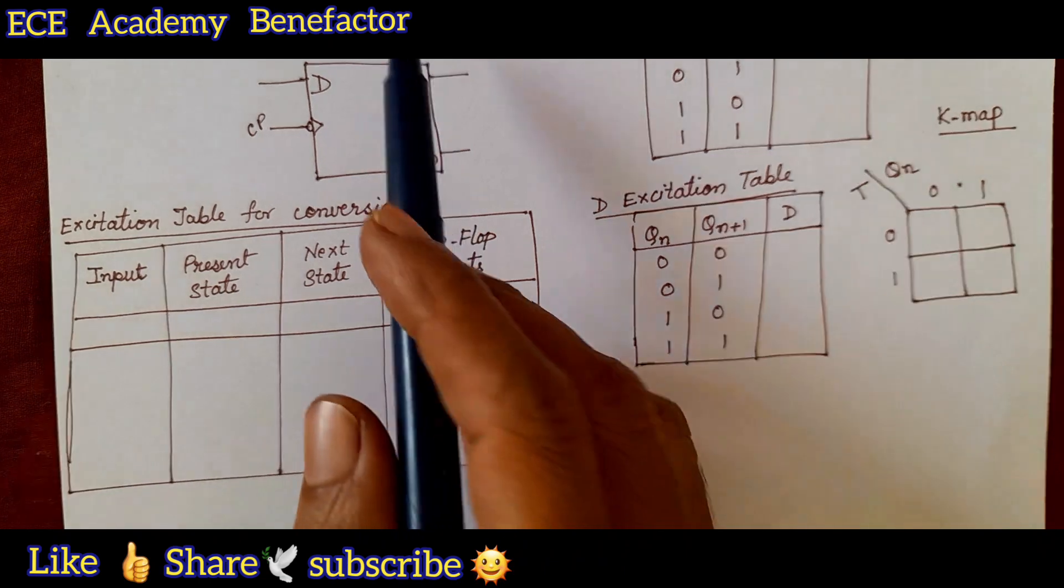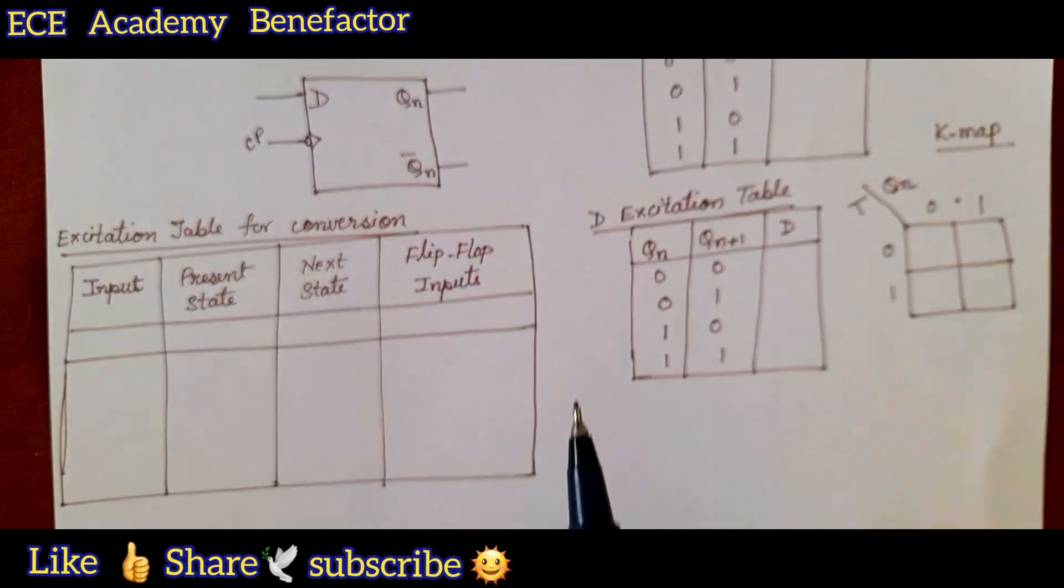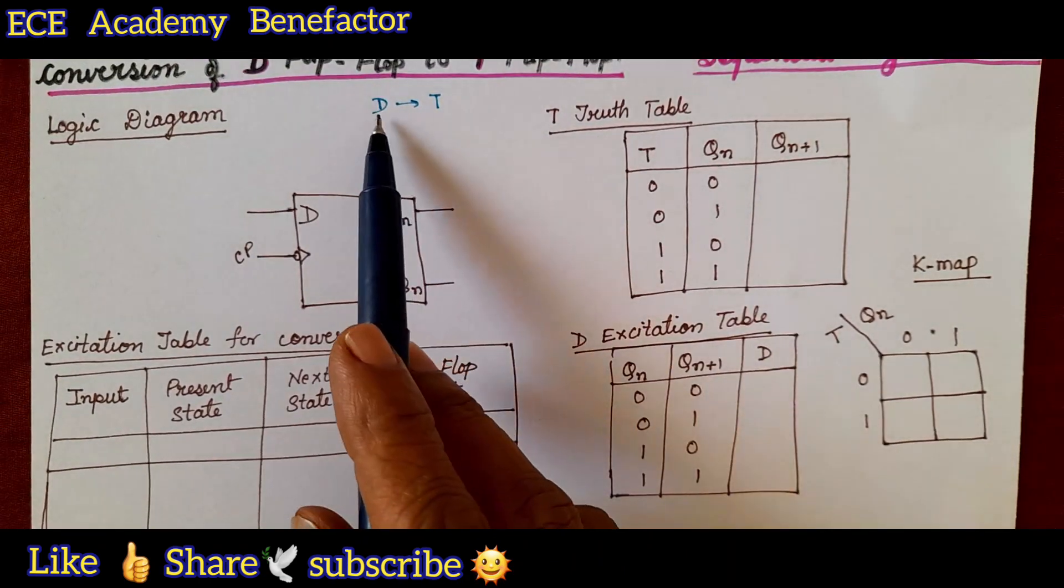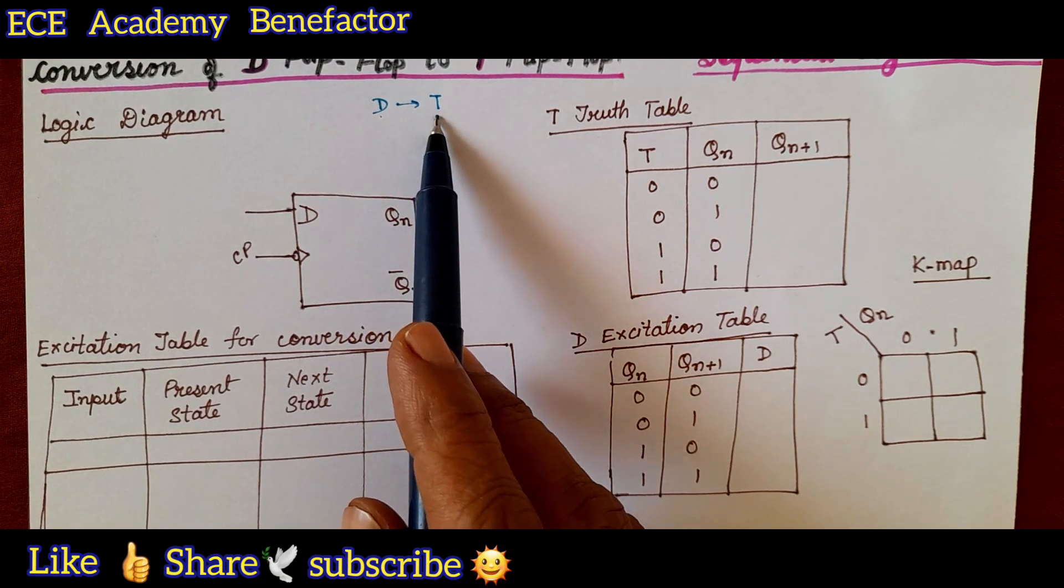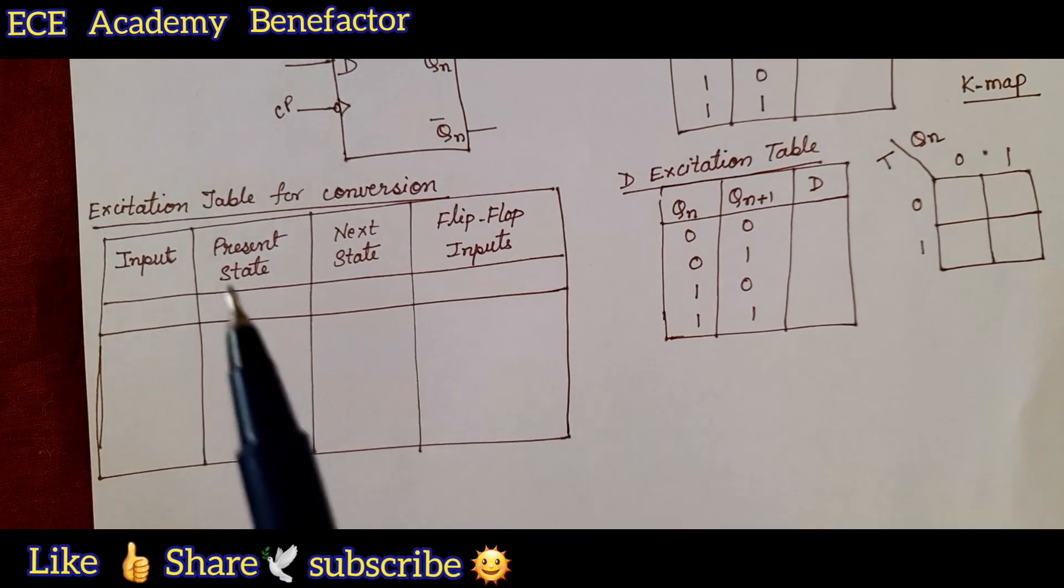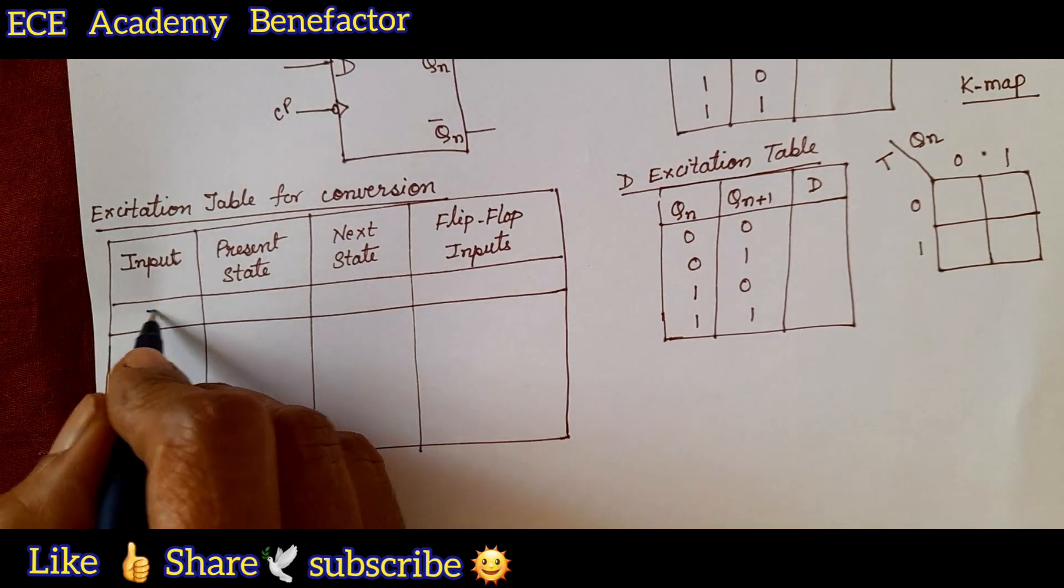What is the input? What we want to convert? D to T. We want to convert D flip-flop to T flip-flop. So what is the input now? T. The input column is T.